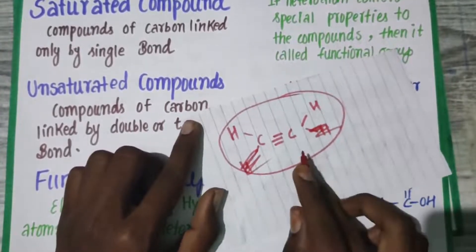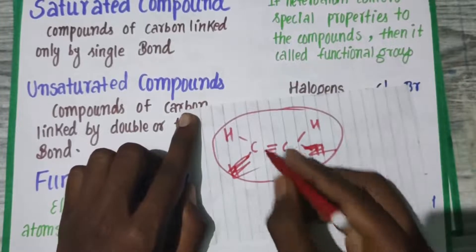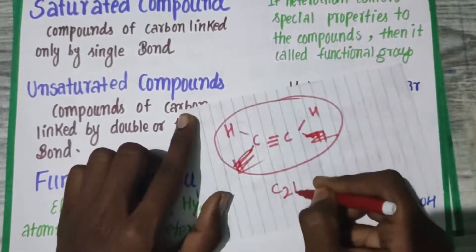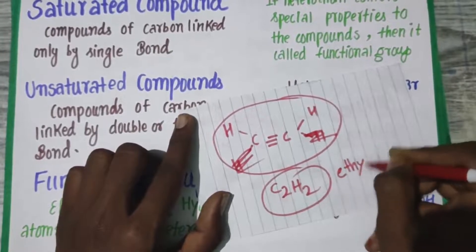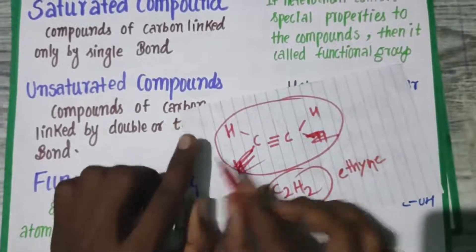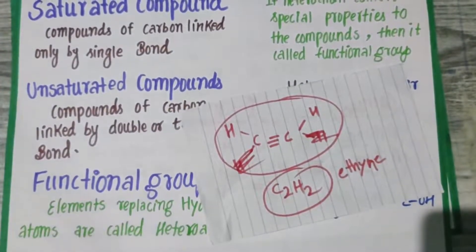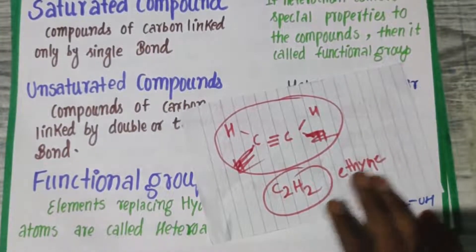You have to put one hydrogen because the valence is four. So C2H2 is the formula for ethyne. Hope you can understand saturated and unsaturated compounds—this is what you need to know.